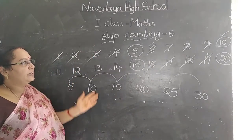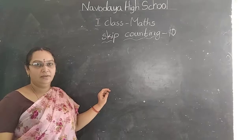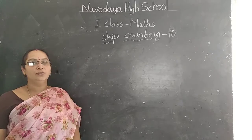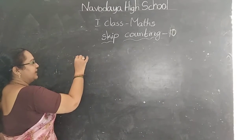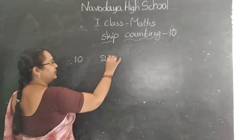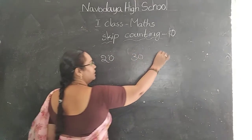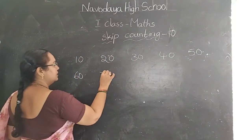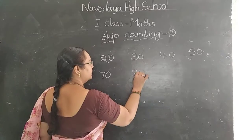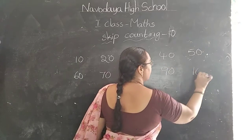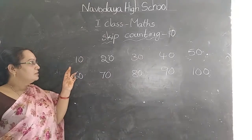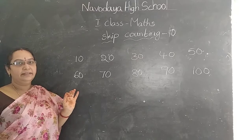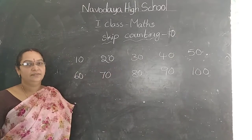That is skip counting of 10. Skip counting of 10 means here we have to count only 10. 10, 20, 30, 40, 50, 60, 70, 80, 90, 100.